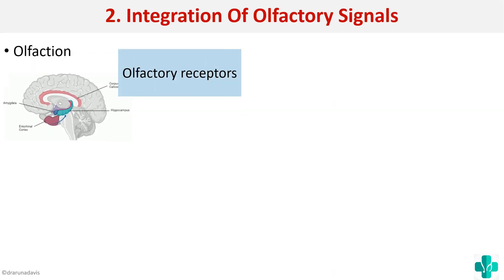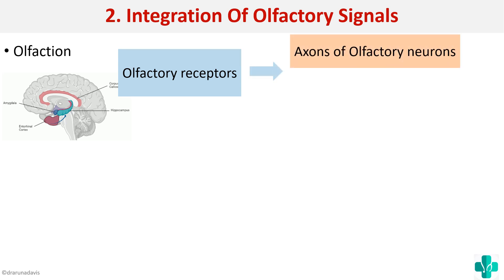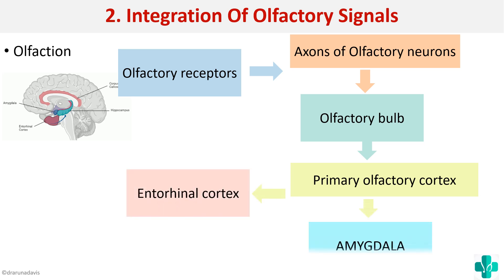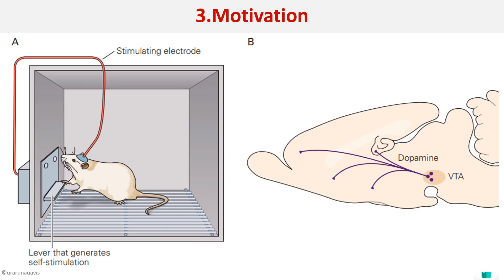The olfactory pathway: olfactory receptors detect the smell, signals are transmitted via the axons of olfactory neurons to the olfactory bulb, from the olfactory bulb the information passes to the primary olfactory cortex and the entorhinal cortex, and finally to the amygdala. Thus, the amygdala and entorhinal cortex are involved in creating olfactory memories.